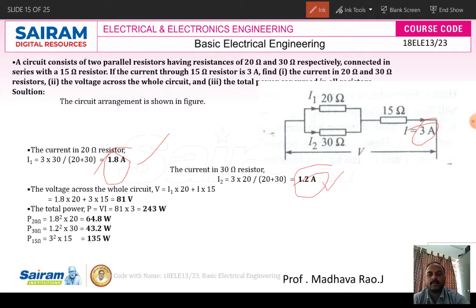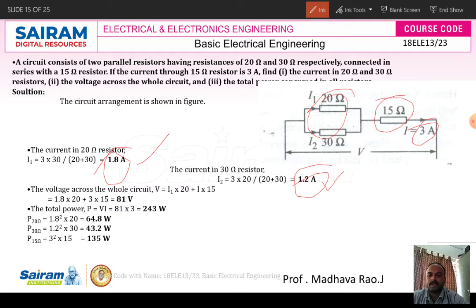Now, coming to the voltage drop across the whole circuit, find the total equivalent resistance. You can also calculate V = I1 × 20 + I × 15 as another method. Adding the equivalent resistance and multiplying by the total current, you will get 81 volts.